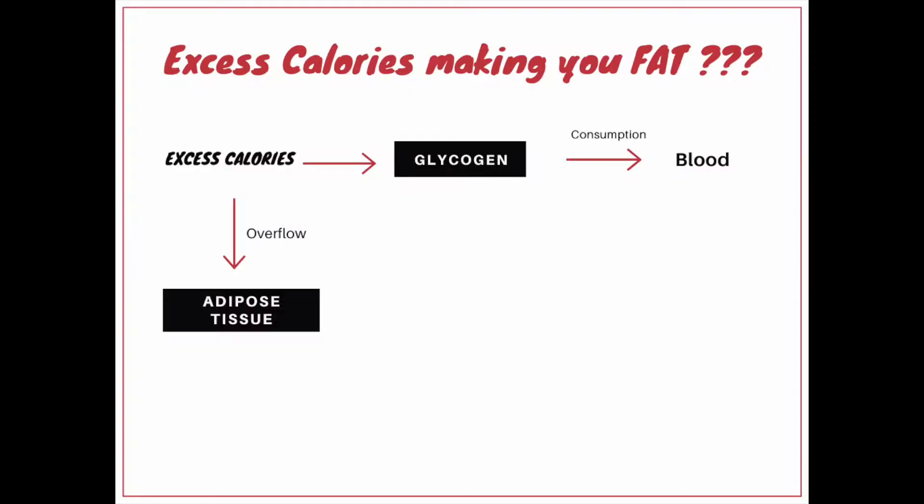Is excess calories responsible for making us fat? The excess calories — the remaining amount of energy after total energy expenditure — will be stored partly in the form of glycogen and partly in the form of adipose tissue, or fat. Glycogen has a limited capacity for accommodating these excess calories. If there is more, it will get deposited in adipose tissue.